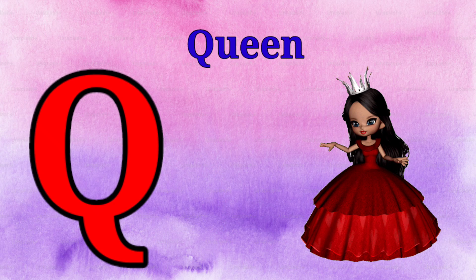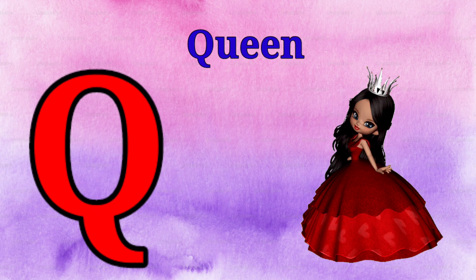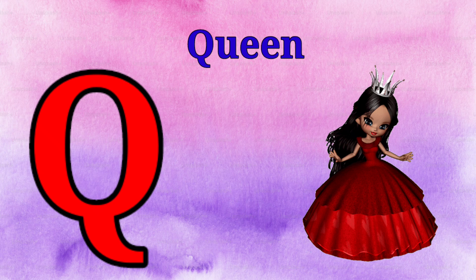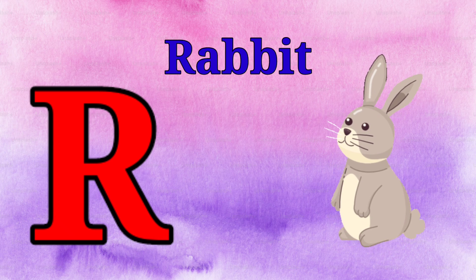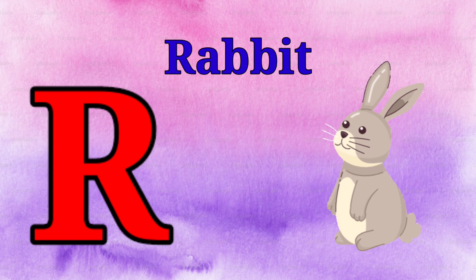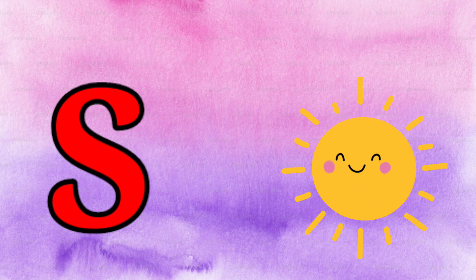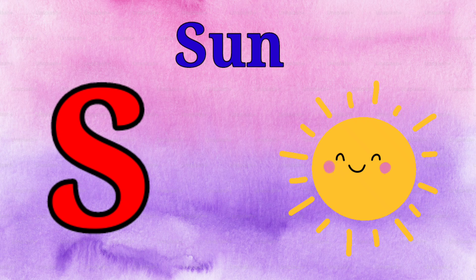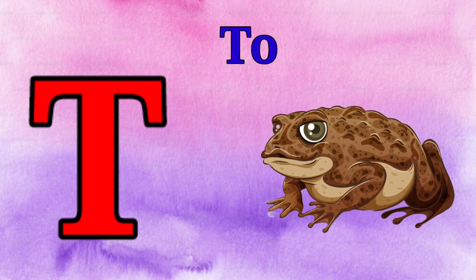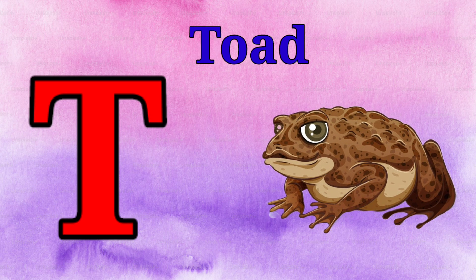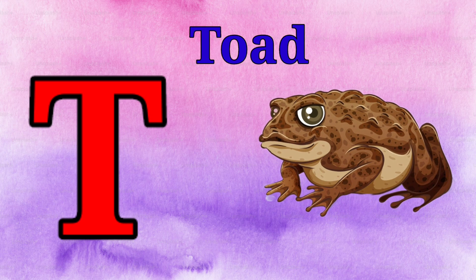Q is for queen, q-q-queen. R is for rabbit, r-r-rabbit. S is for sun, s-s-sun. T is for toad, t-t-toad.